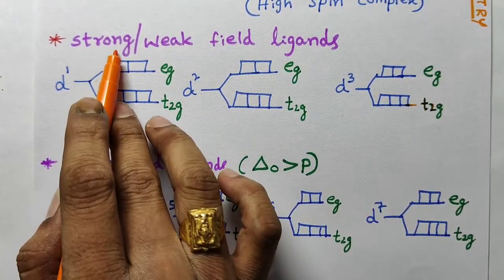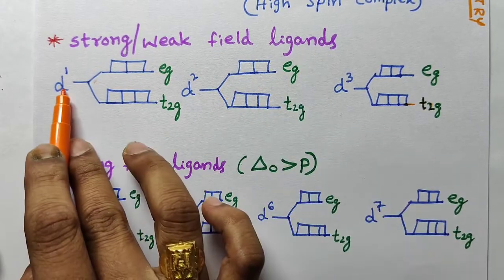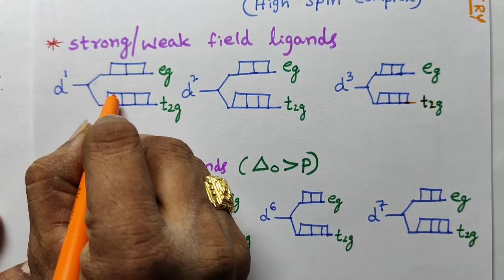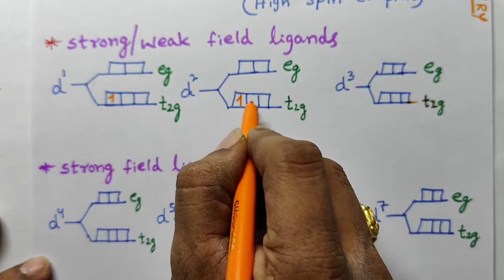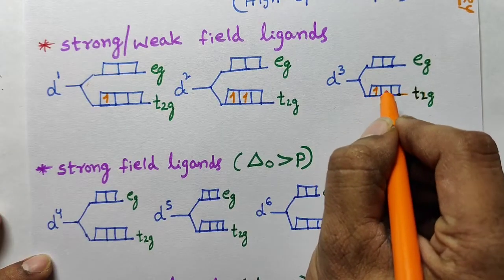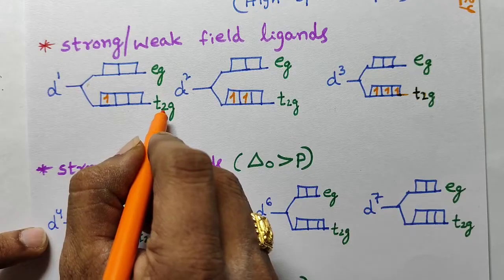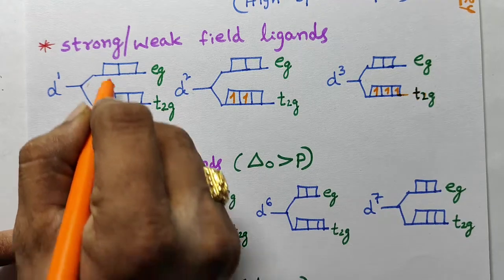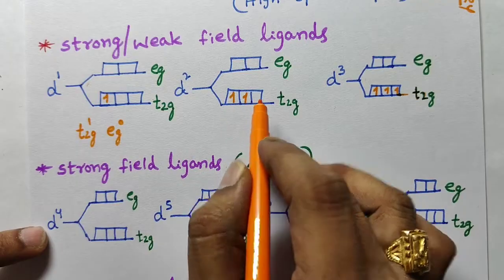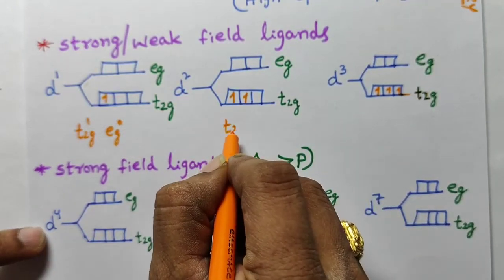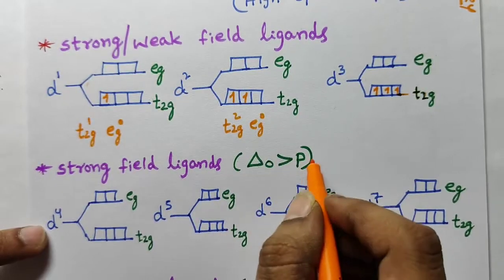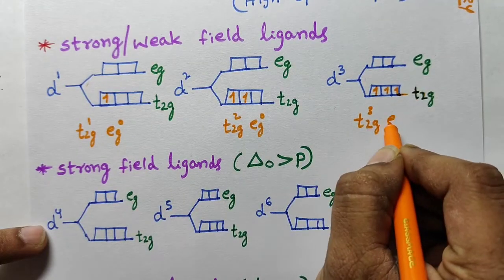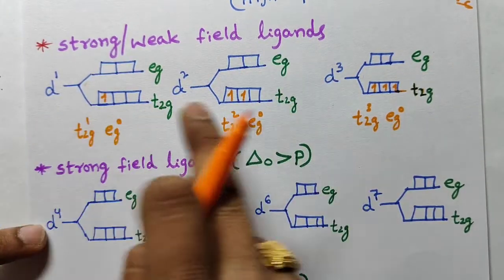Whether you take a strong ligand or weak ligand, d1, d2, d3 are the same. For d1: one electron in t2g, so t2g¹ eg⁰. For d2: two electrons in t2g, so t2g² eg⁰. For d3: all three electrons in t2g only, so t2g³ eg⁰. Strong or weak, d1, d2, d3 are the same.